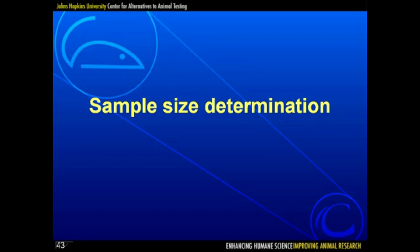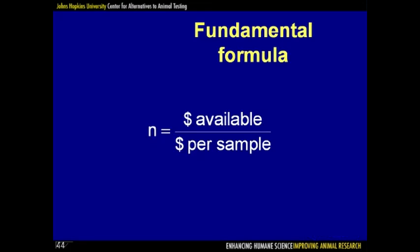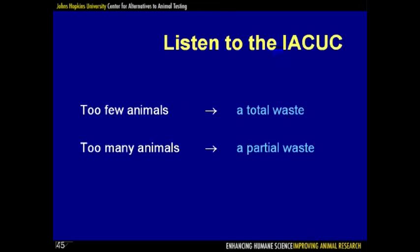We've reached the final section on sample size determination. To determine the appropriate sample size, take how much money you have available, divided by the cost per subject — but of course, that formula isn't sufficient. If you use too few animals in your study, it will be a complete waste, as you will have learned nothing. If you use too many animals, it will be a partial waste. Using too few animals is far worse than using too many, but identifying the appropriate number is a laudable goal — you will achieve the aims of your experiment with the minimal use of animals.